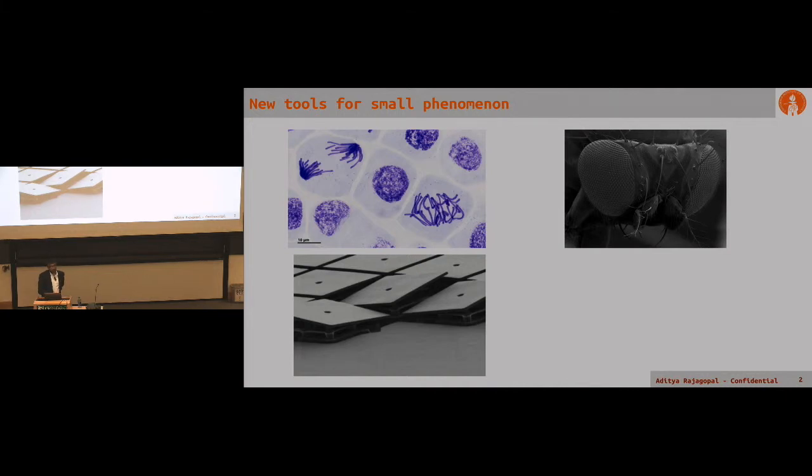New engineering approaches and new tools have become a way for us to look at really small phenomena. Here, for example, you can see light microscopy helping us image cell mitosis and electron beam microscopy that helps us look at things like MEMS display elements and interesting physiology like a fly's eye.